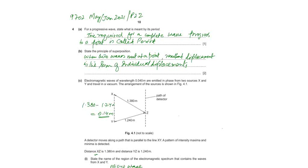9702 May, June 2021, Paper 2, Variant 2, Question No. 4.